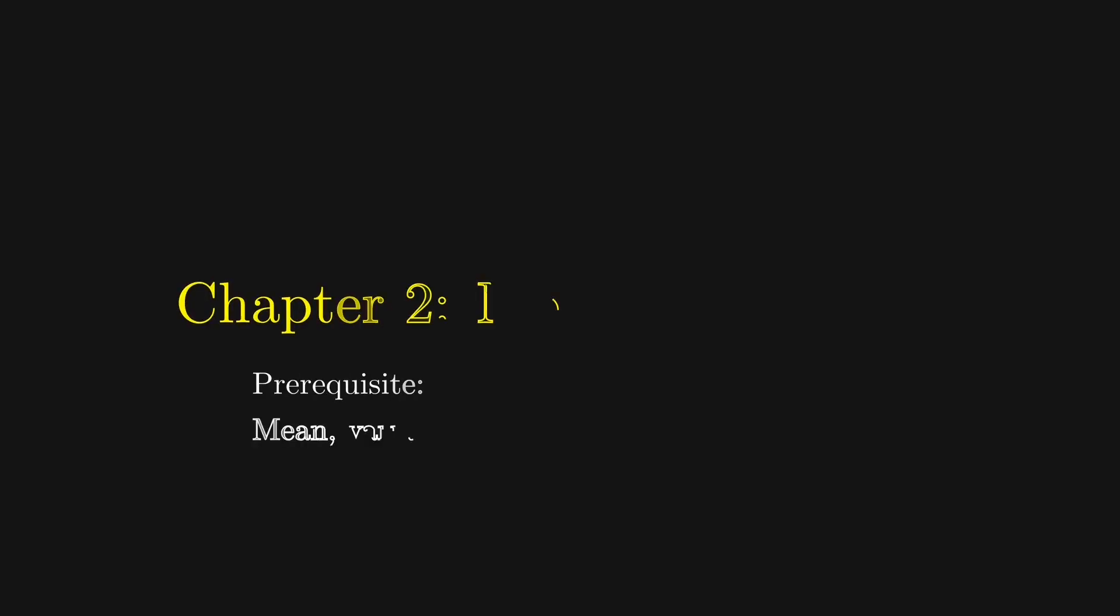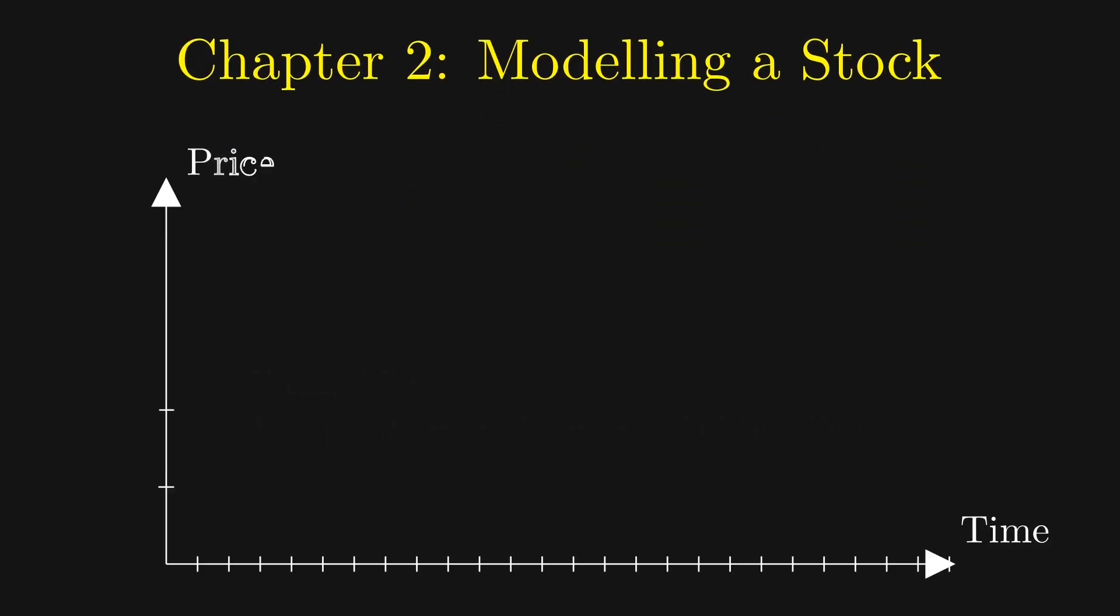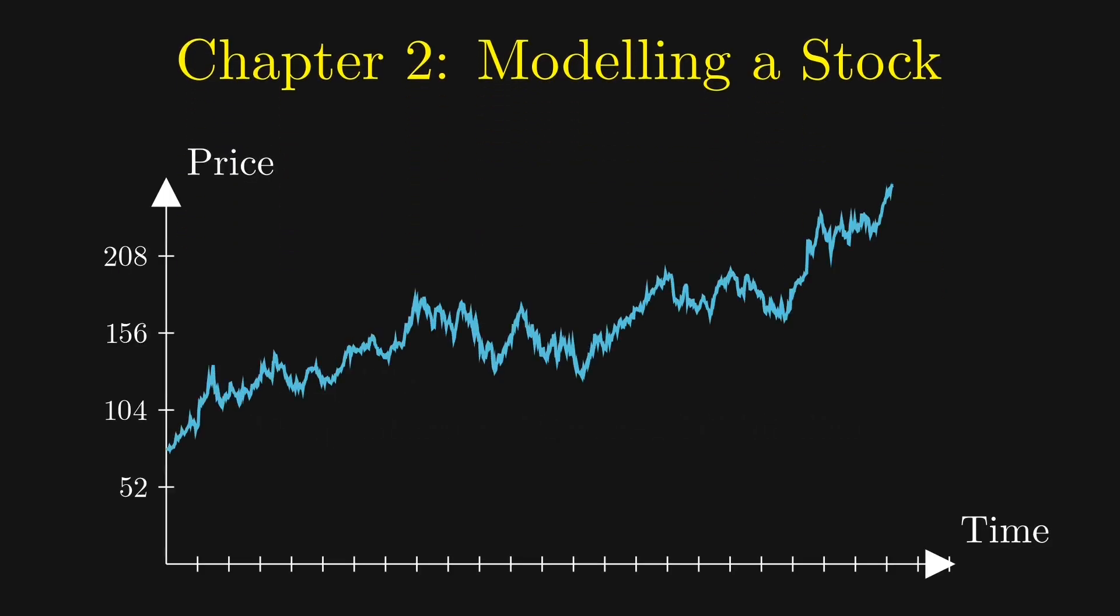The first step is to convert stock price movements into a mathematical model. If we look at Apple's stock price movements in the past five years, we see a lot of randomness but also a general upward trend. To model this behavior, our first idea is to split the price movements into two parts: the drift and the randomness.